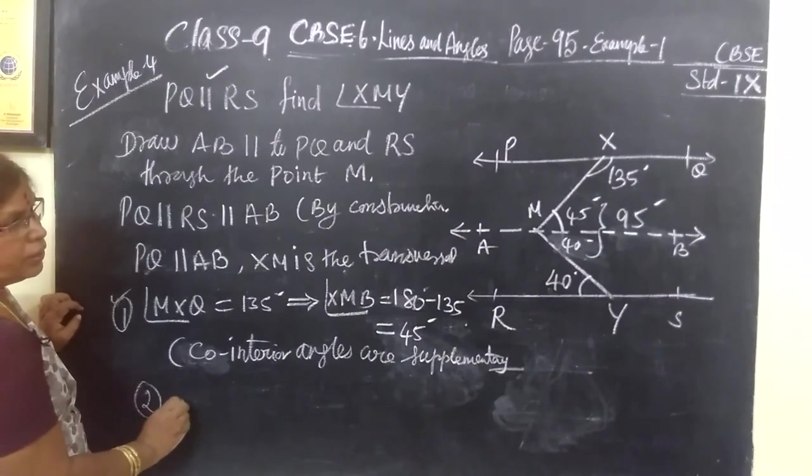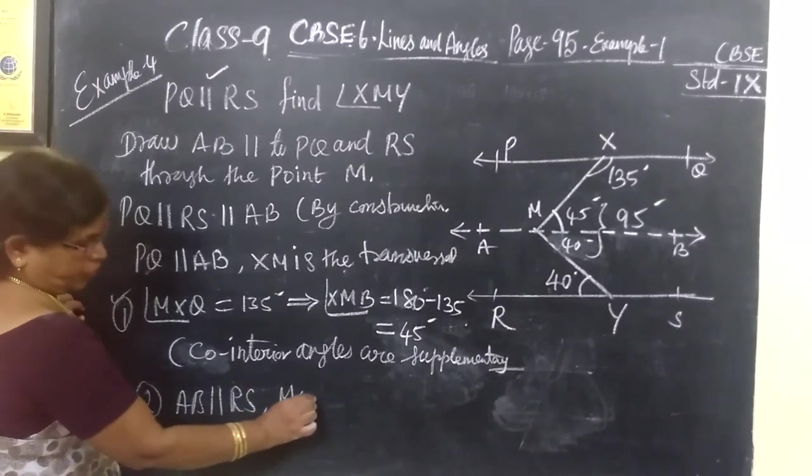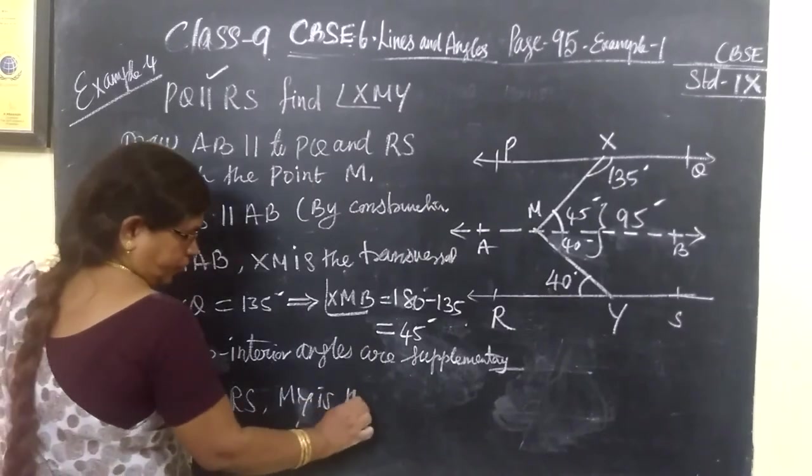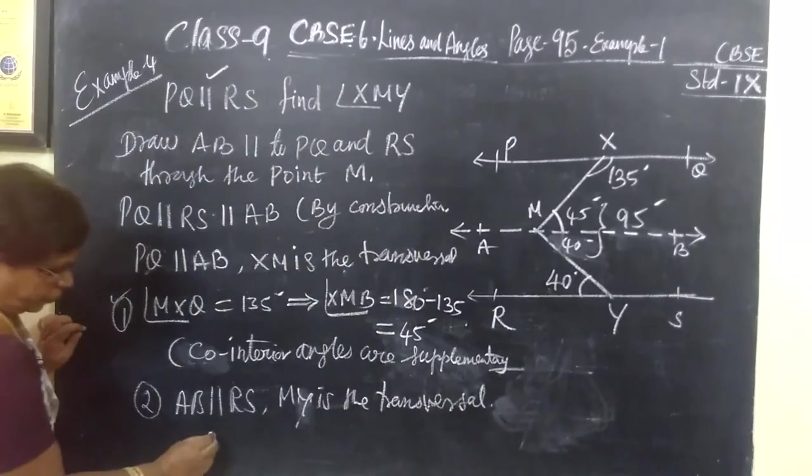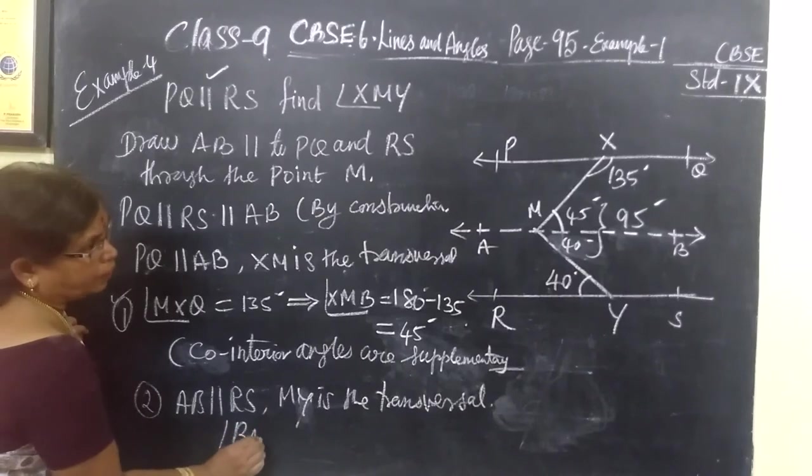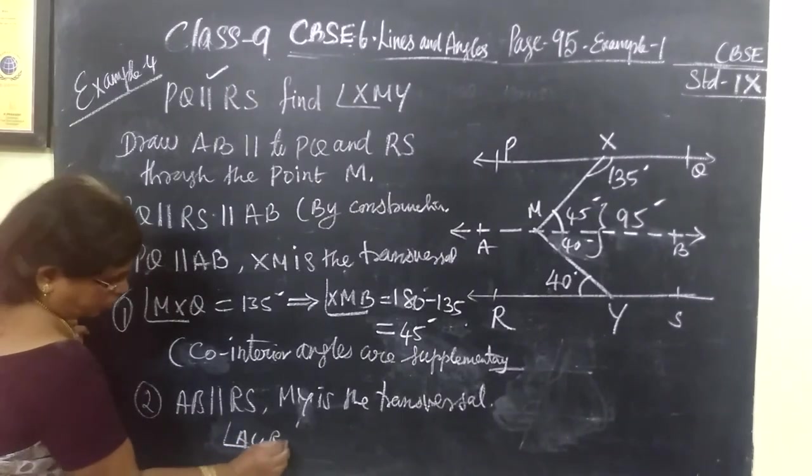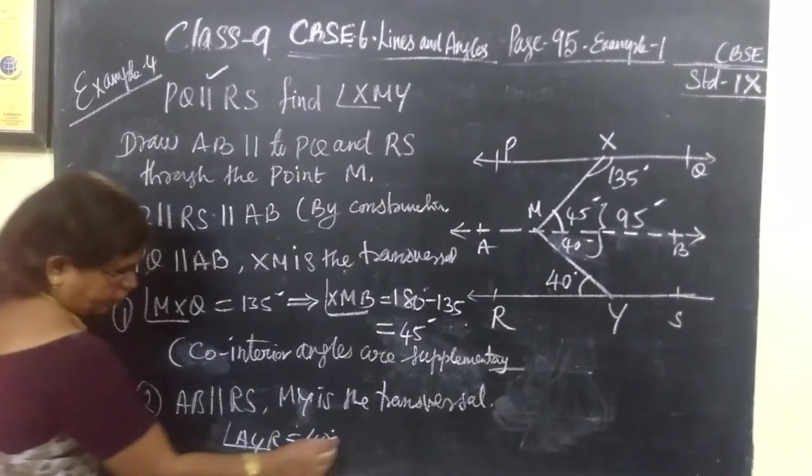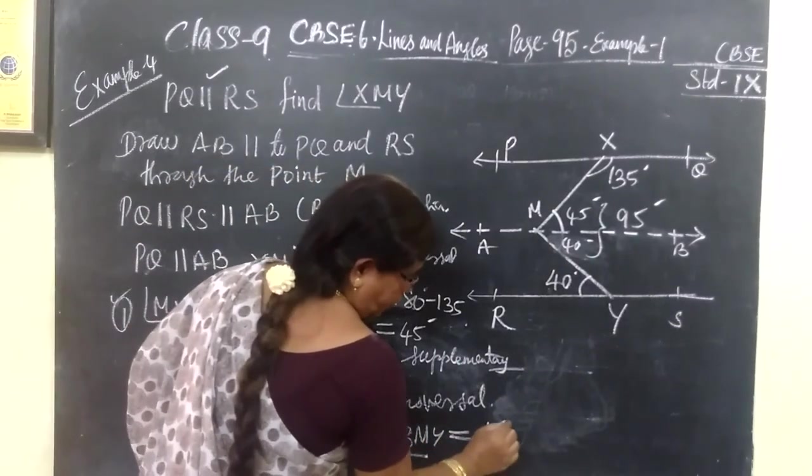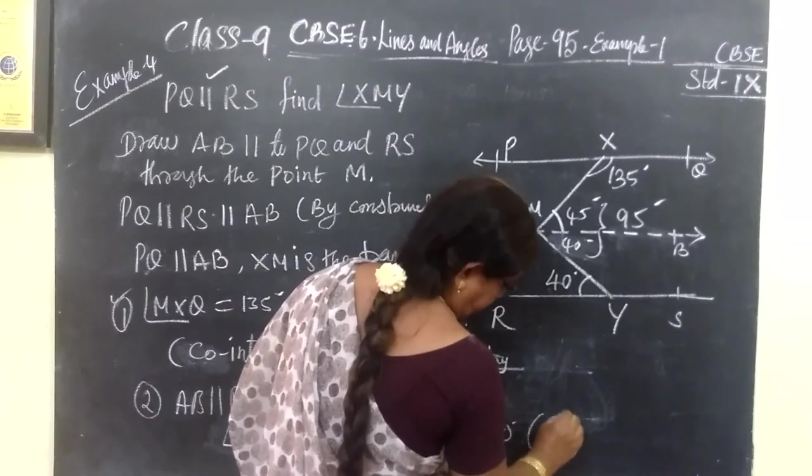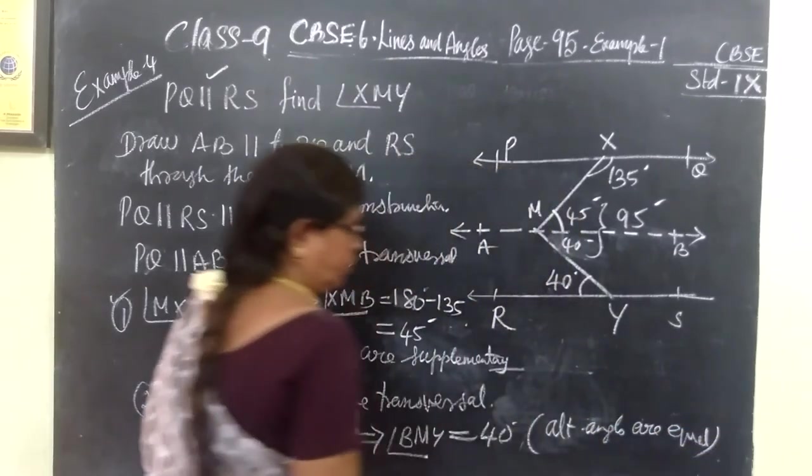Then second one. Consider AB parallel to RS. Which is the transversal? MY is the transversal. Therefore, angle BMY, not BR, that only you want to find. Angle AYR equal to 40 implies angle BMY also equal to 40. What is the reason? Alternate angles are equal. That's all.